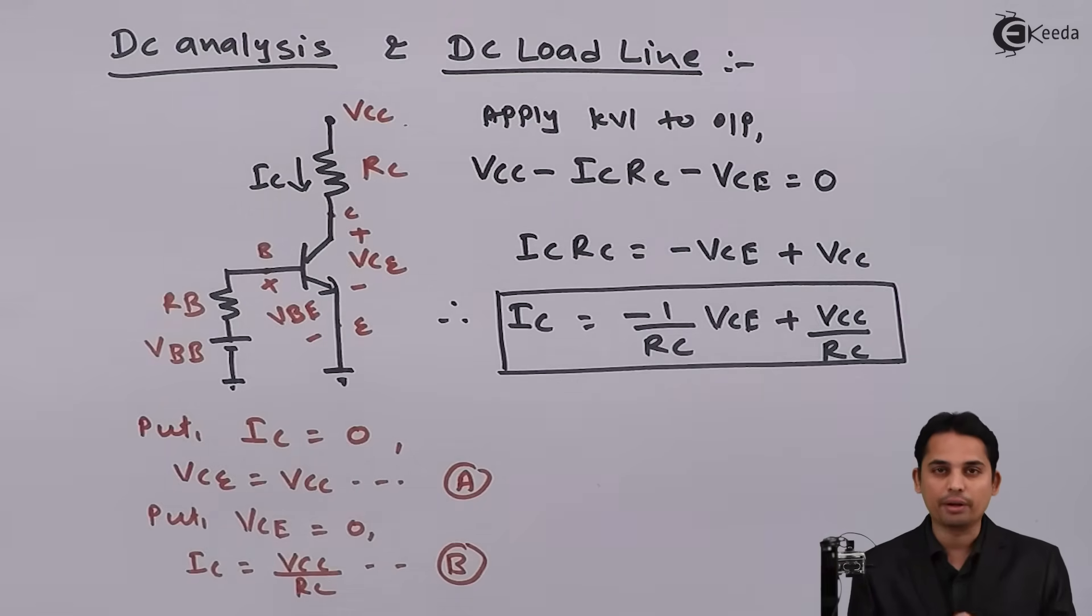This is very interesting. The DC loadline is graph of all values of IC and VCE. For common emitter configuration, IC and VCE will be on output characteristics. That is why DC loadline is drawn at output characteristics.